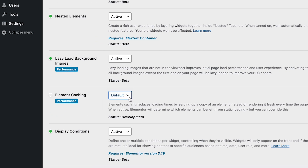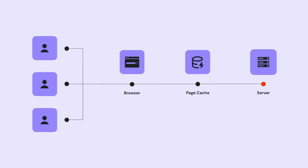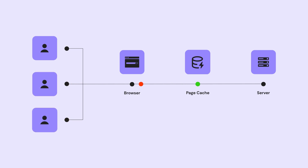Once you activate the feature, it will automatically recognize which Elementor and Elementor Pro widgets rely on static or dynamic content. If the widget is static, its output will be cached on the server. This means that the widget's output is stored in a temporary storage location, so that subsequent visitors to the website from that server can access it quickly without having to render it for themselves.